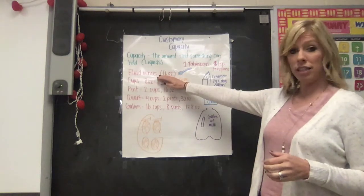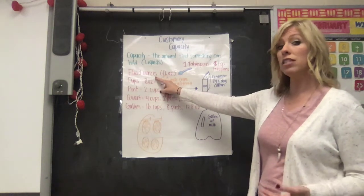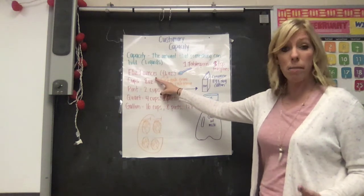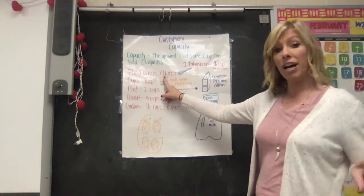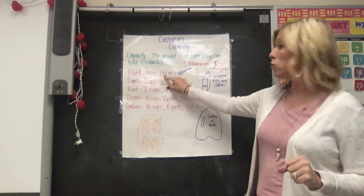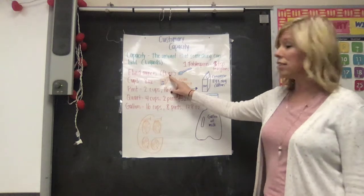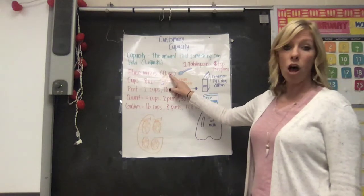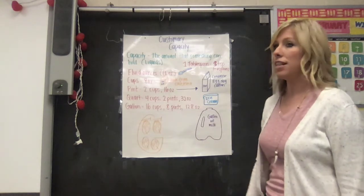So fluid ounces - not to be mistaken with ounces as far as weight, like when you hear a baby is born and they weigh two pounds five ounces. Those are different kinds of ounces. We're talking about fluid ounces. A lot of times you will see FL with the ounces. And ounces is represented with OZ. There is no Z in the word ounces but that's how we represent that.